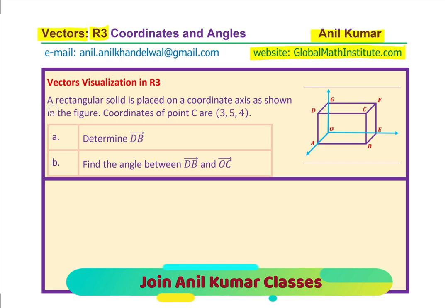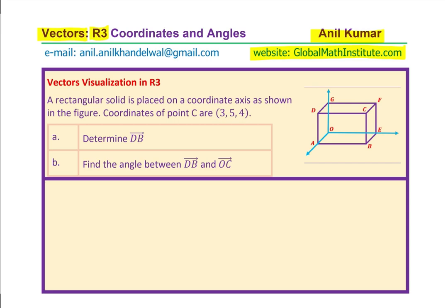The question here is: a rectangular solid is placed on a coordinate axis as shown in the figure. Coordinates of point C are (3, 5, 4). Part a: Determine the vector DB. Part b: Find angle between vectors DB and OC. You can pause the video, answer the question and then look into my suggestions. For some of my students, this is the very first introduction to vectors in R3 and therefore, I am going to get into details while solving this question.